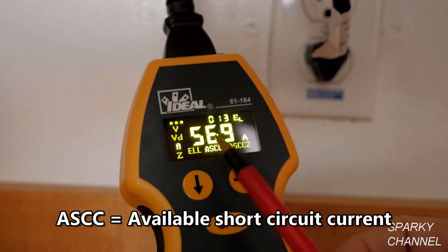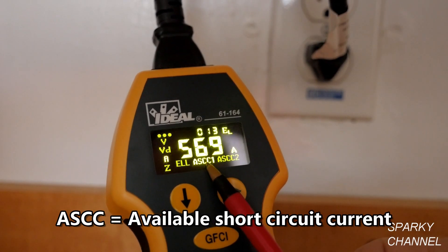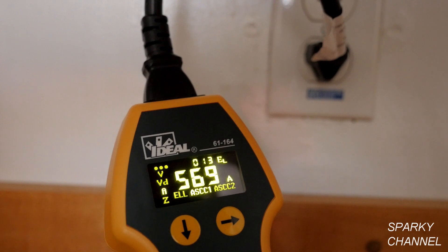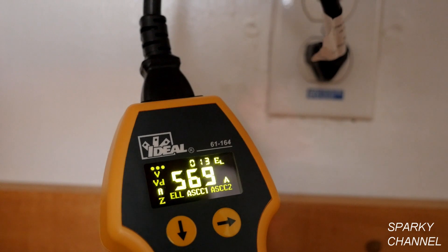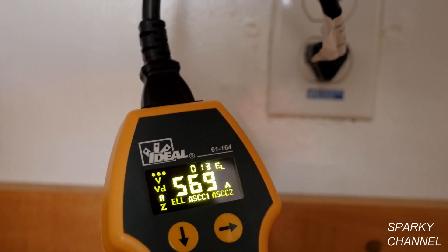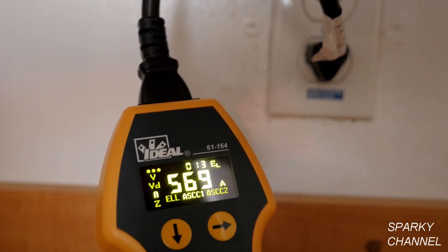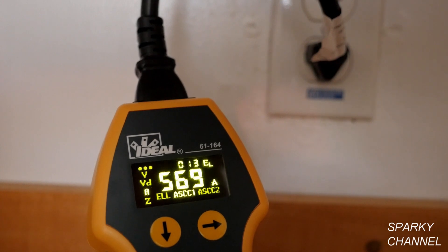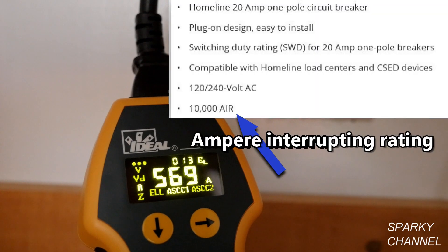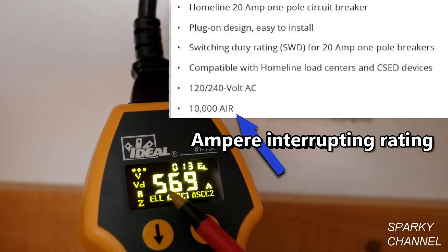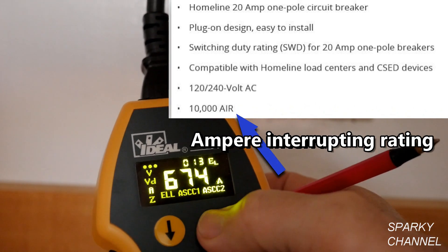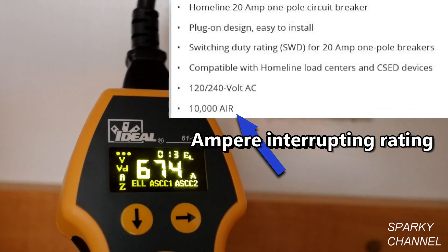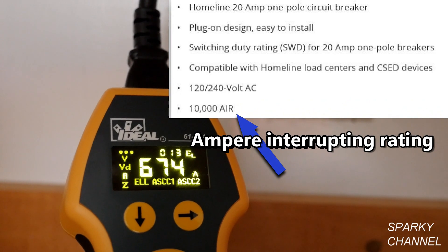Now we'll press the horizontal button, and that brings us to ASCC1 and ASCC2. This is available short circuit current, and it is figured in two different ways. What this is telling us is that if the hot, the neutral, and the ground were all tied together in what is called a bolted fault, also sometimes called a dead fault, it's your worst case scenario. You would get 569 amps. Your regular 20 amp or 15 amp circuit breaker is typically rated to trip at anything below 10,000 amps. So we're only at 569 amps ASCC.